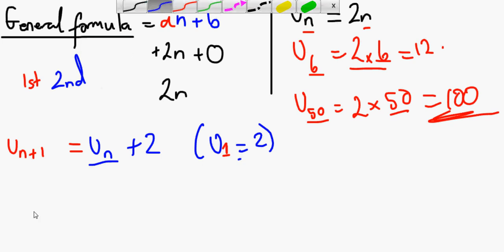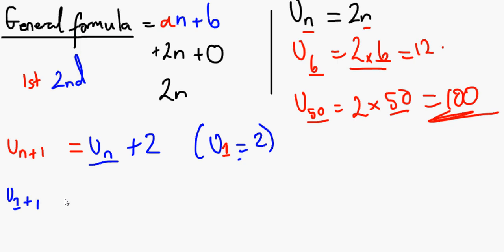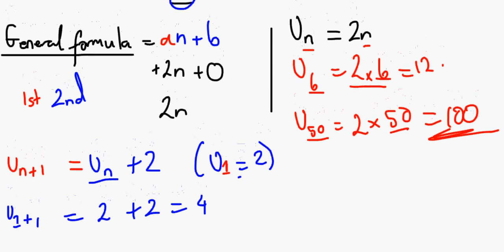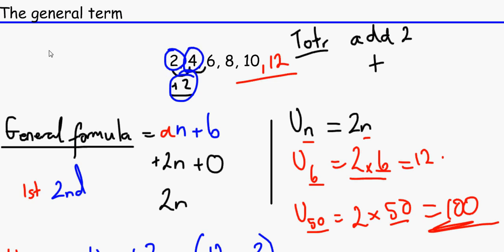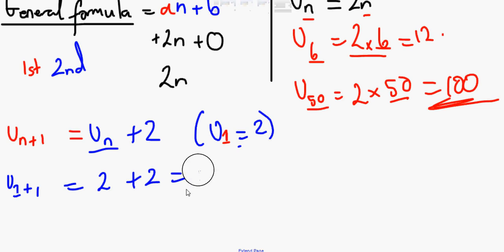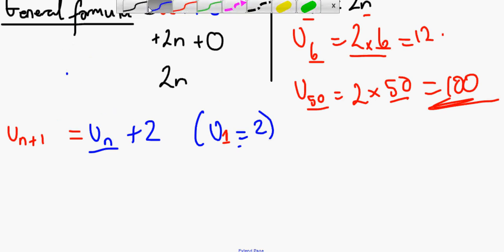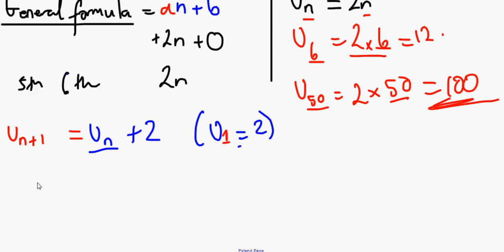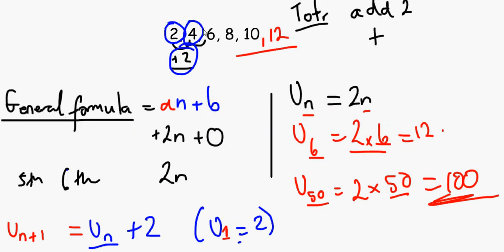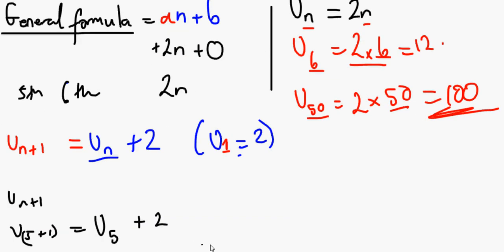So to get to the second term: U1 plus one — that's the first term, which is 2, plus 2 — equals 4. There's the second term. We can also use this to find the fifth and sixth terms. To go from the fifth to the sixth: U5 plus one equals U5 plus 2. U5 is 10, plus 2 equals 12. And that's our sixth term right there.